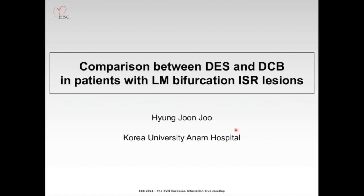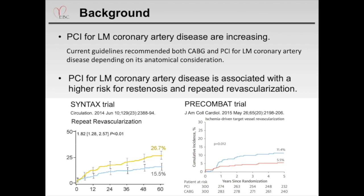I am Hyeong Joon Joo from Korea University Anam Hospital, and thank you for having me at EBC 2021. My topic is repeat PCI for left main bifurcation ISR lesion. I have nothing to disclose. Current guidelines recommend both CABG and PCI for left main coronary artery disease depending on anatomical consideration. PCI for left main coronary artery disease became feasible and safe as CABG. Therefore, the proportion of PCI for left main coronary artery disease is significantly increasing. The problem is that PCI for left main coronary artery disease is associated with higher risk for restenosis and repeat revascularization.